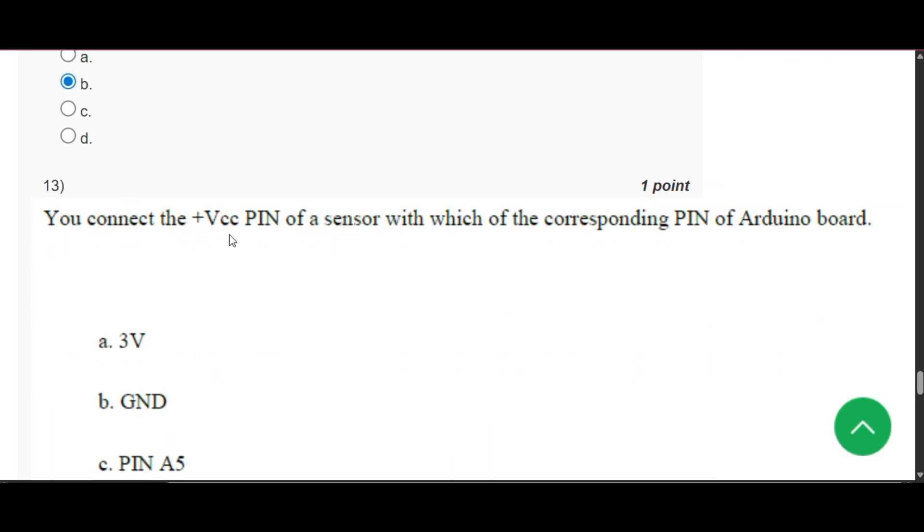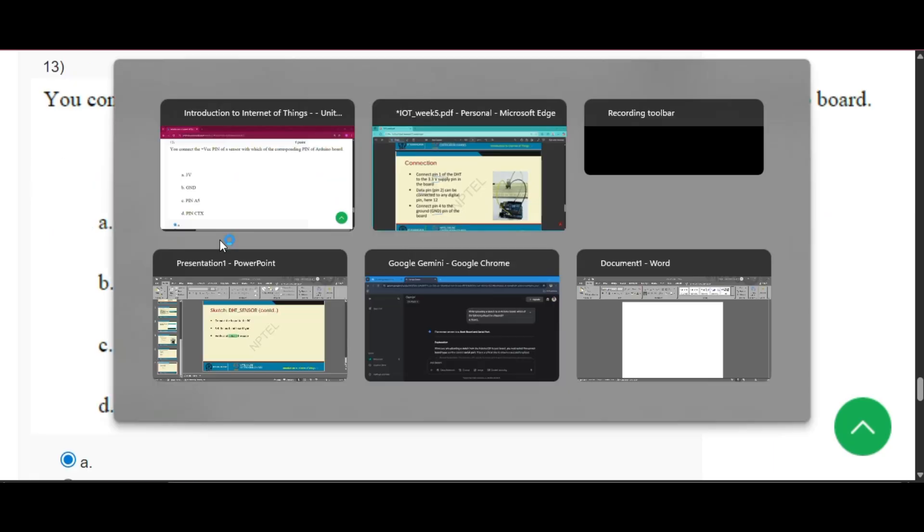Now question number 13: You connect the plus VCC pin of a sensor with which of the corresponding pin of Arduino board. So the answer will be 3 volt.